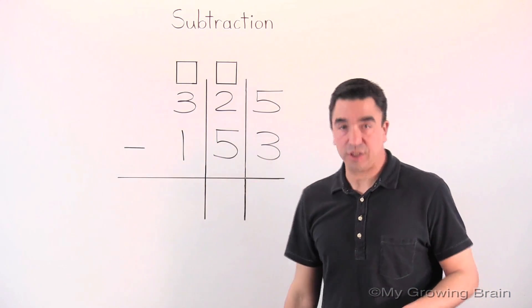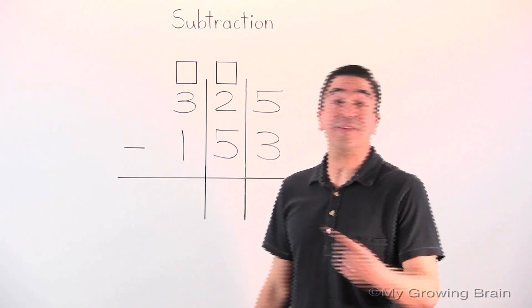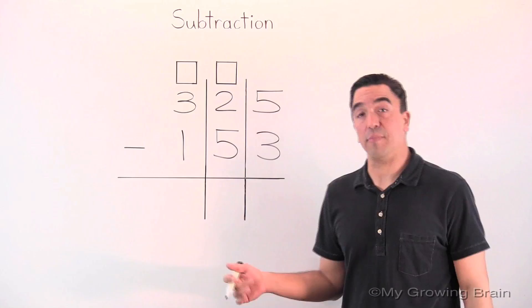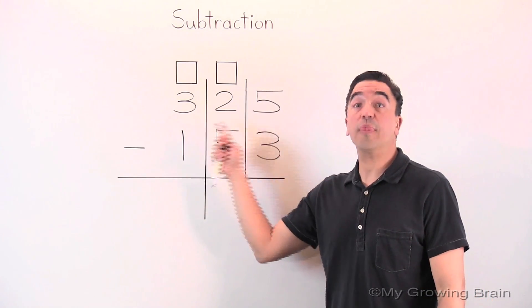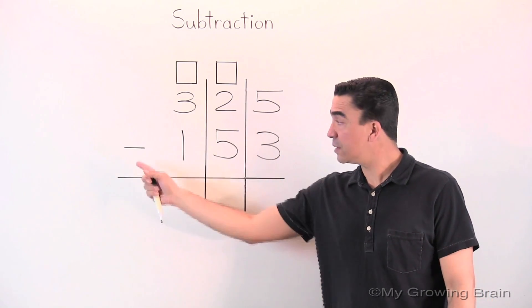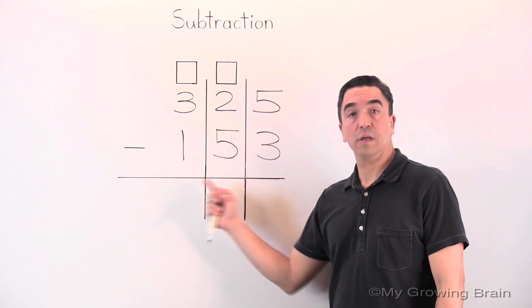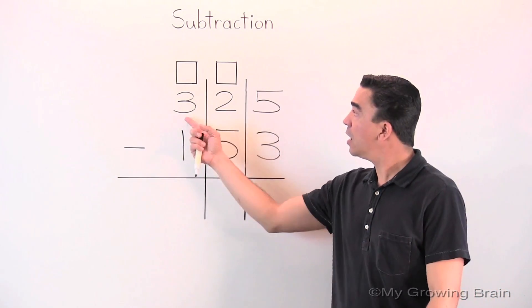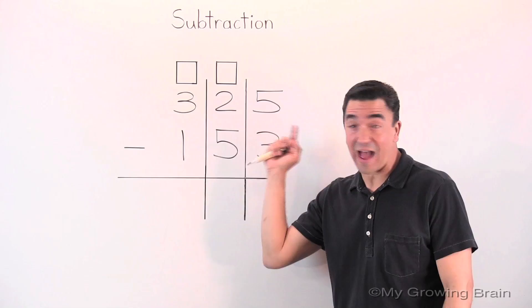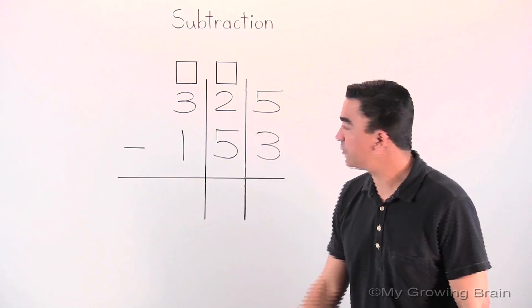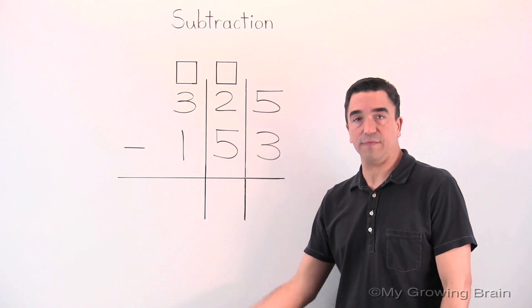Today's lesson is subtraction. I love subtraction. Let's get to it. Here's our problem. A three-digit number subtract or minus a three-digit number. 325 minus 153.